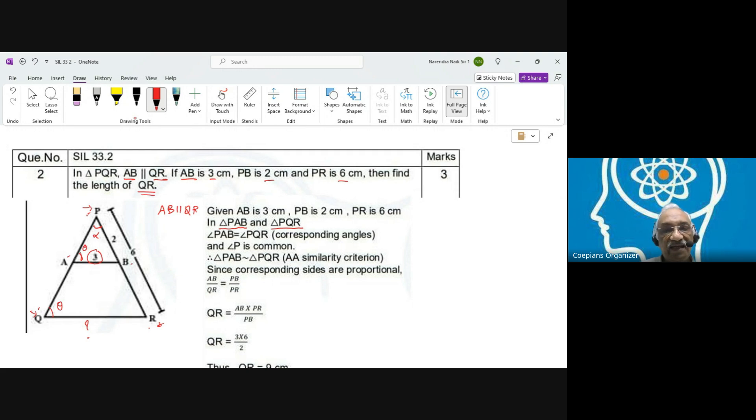We have to apply the AA similarity criterion, the similarity theorem. Now we get that PAB is similar to PQR. These two triangles, PAB and PQR, these two triangles become similar.